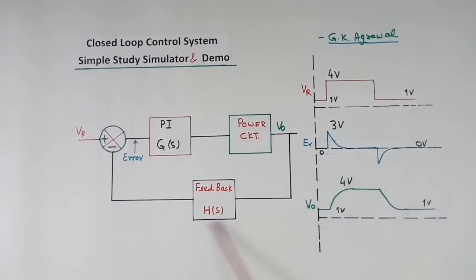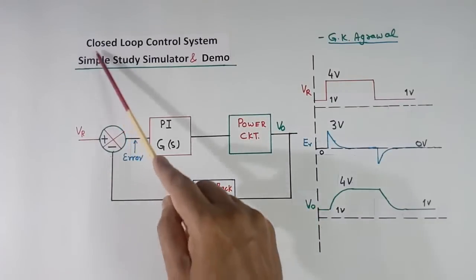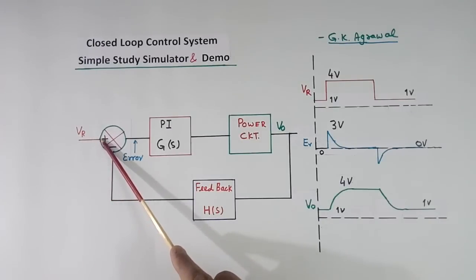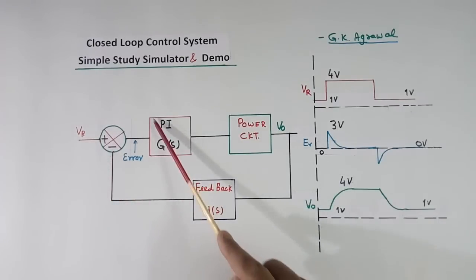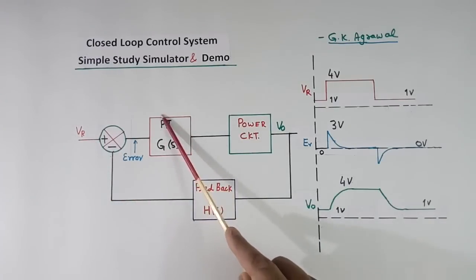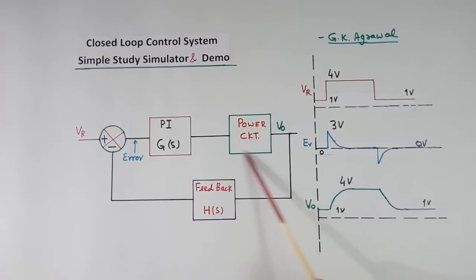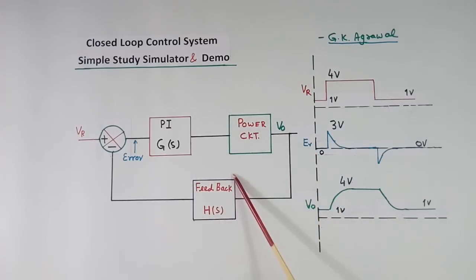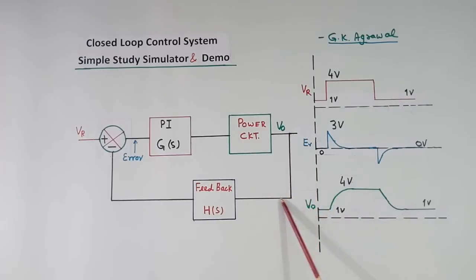This is a normal closed loop control system. This is reference input. This is PI controller. This is power circuit. This is output. This is feedback block. This output is used for feedback.